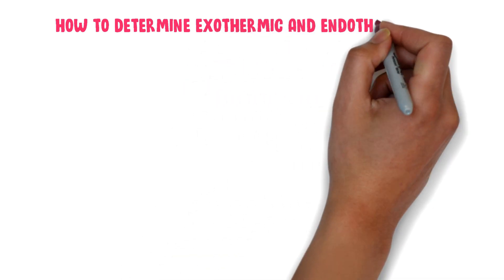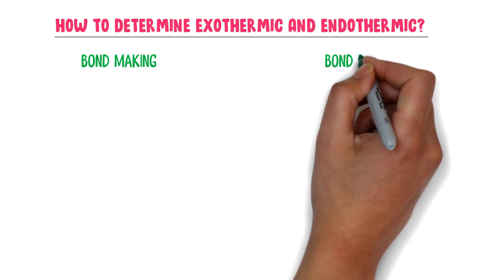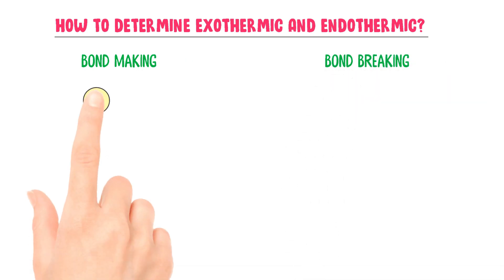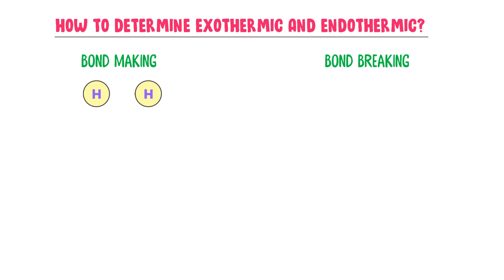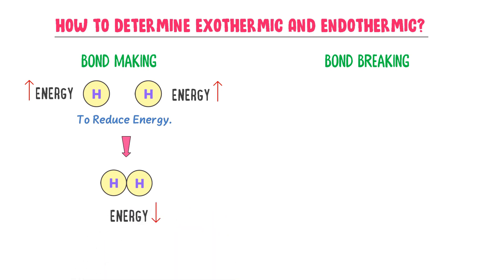Now, how can you determine if a reaction is exothermic or endothermic? I teach two easy phenomena: bond making and bond breaking. Consider two isolated hydrogen atoms — each has more energy in its isolated state. In order to reduce their energy, the two hydrogen atoms combine together to form a hydrogen molecule. The hydrogen molecule has lesser energy than the individual atoms, so a bond is formed between them.